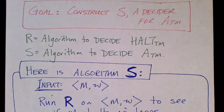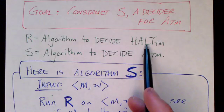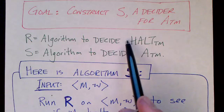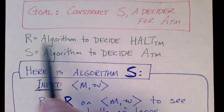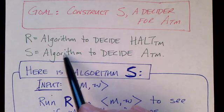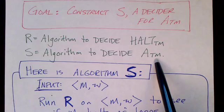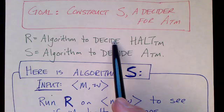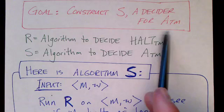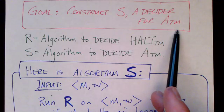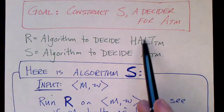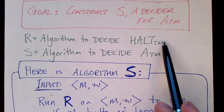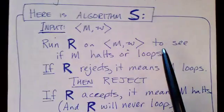So remember the logic of our proof. We're trying to prove that the decider for HALT doesn't exist, and we're going to do it by proof by contradiction. We assume that the decider for HALT, R, does exist. Then we're going to construct an algorithm to decide the acceptance problem for Turing machines. The proof basically consists of constructing S assuming that you've already got R. We know S can't exist, so if we're able to construct it assuming R exists, then we've reached a contradiction, proving R cannot exist.